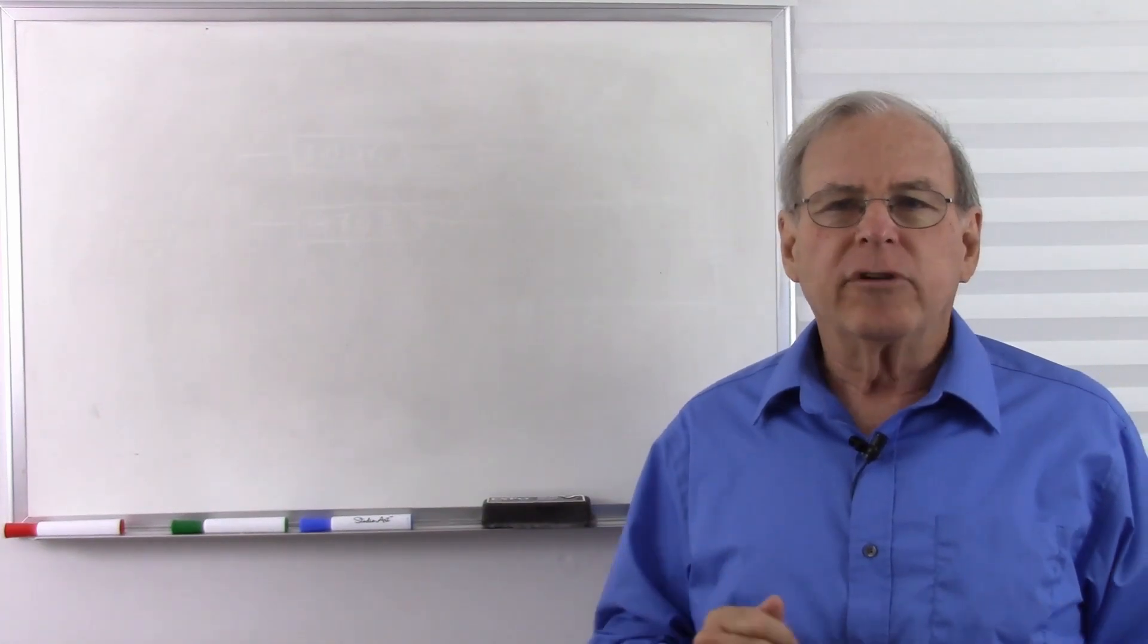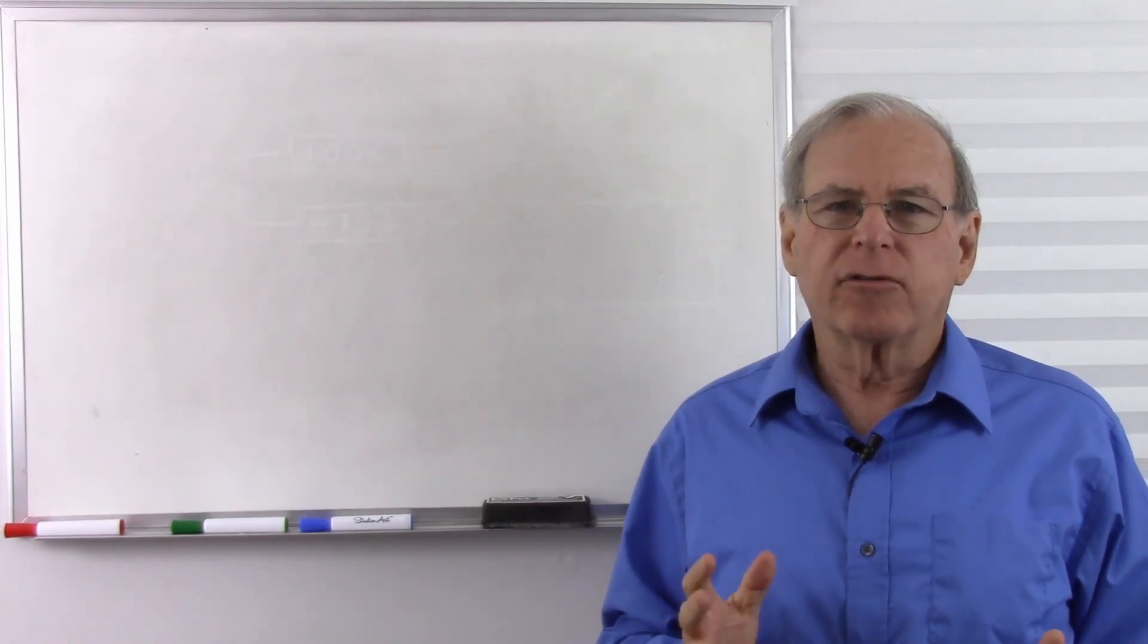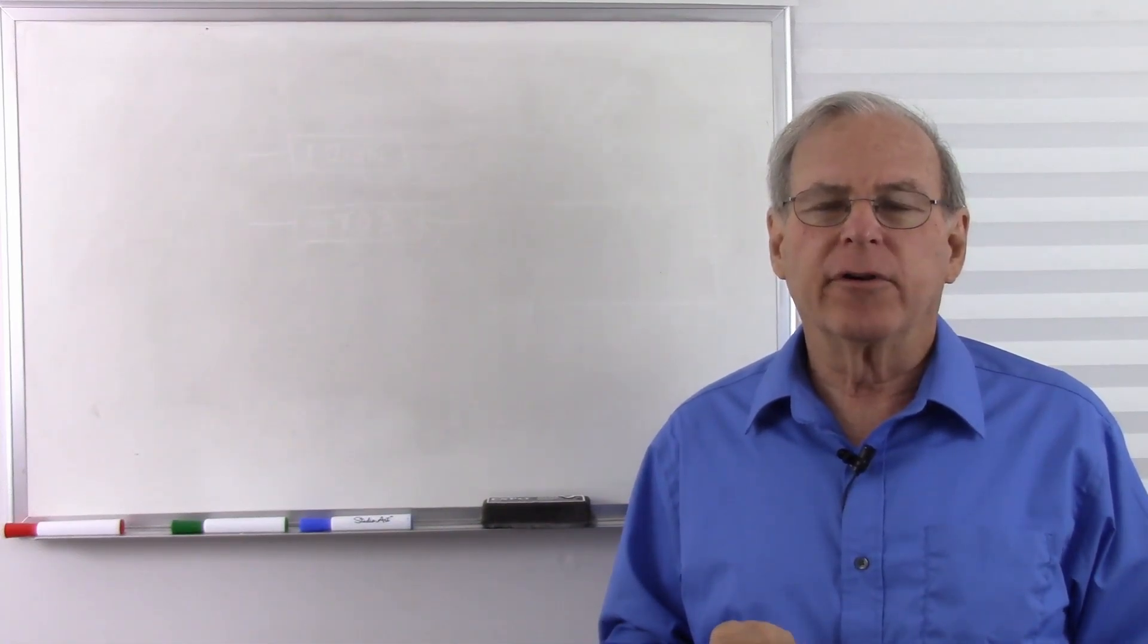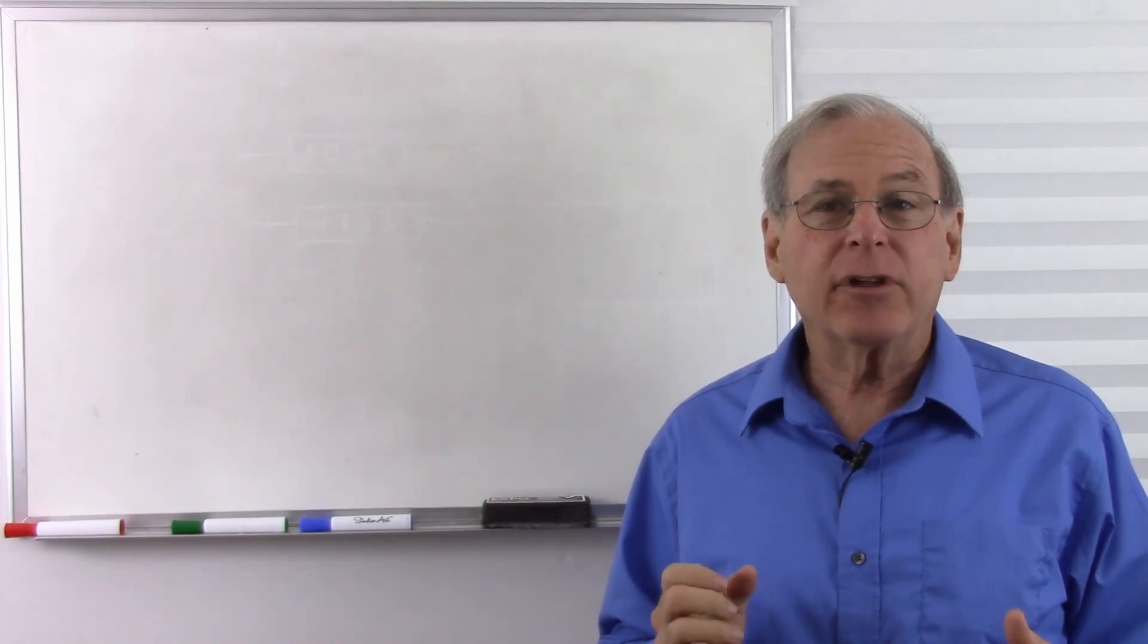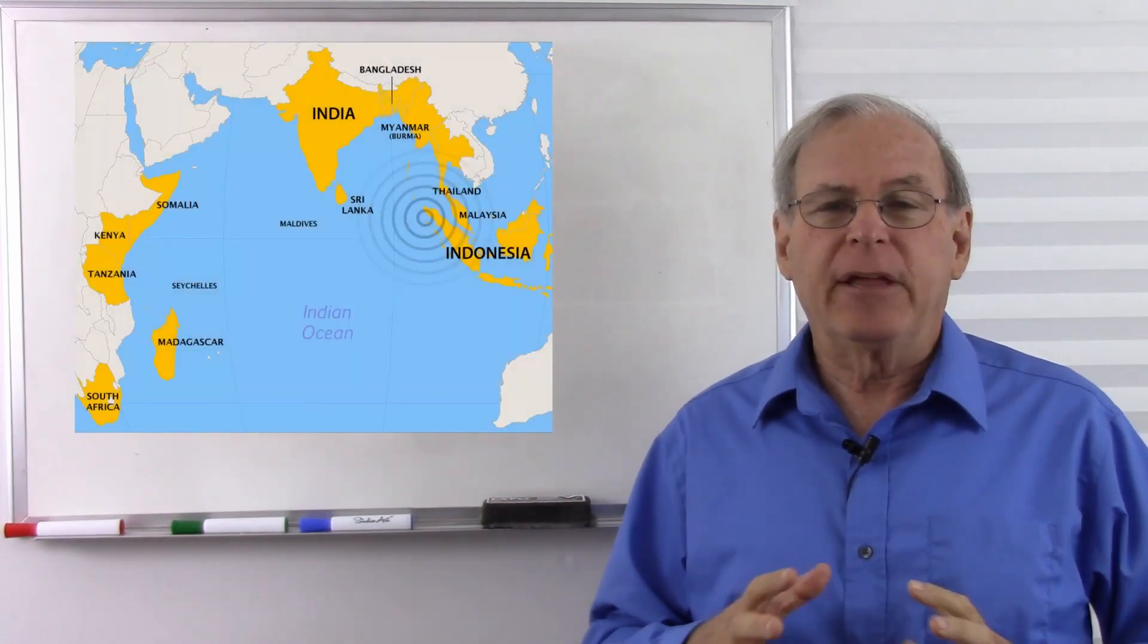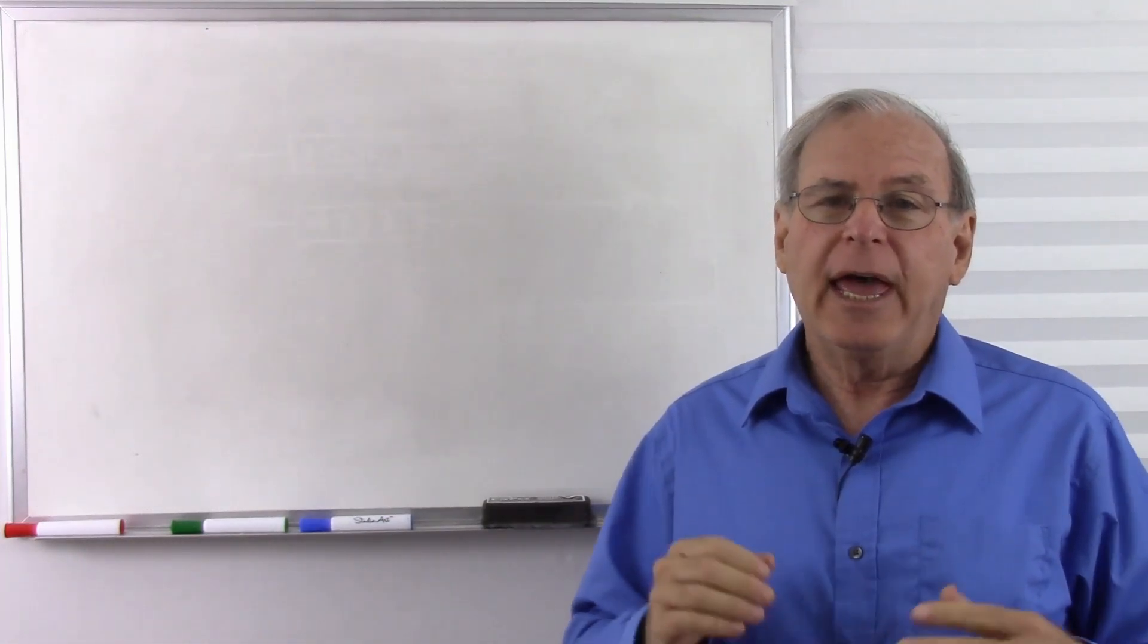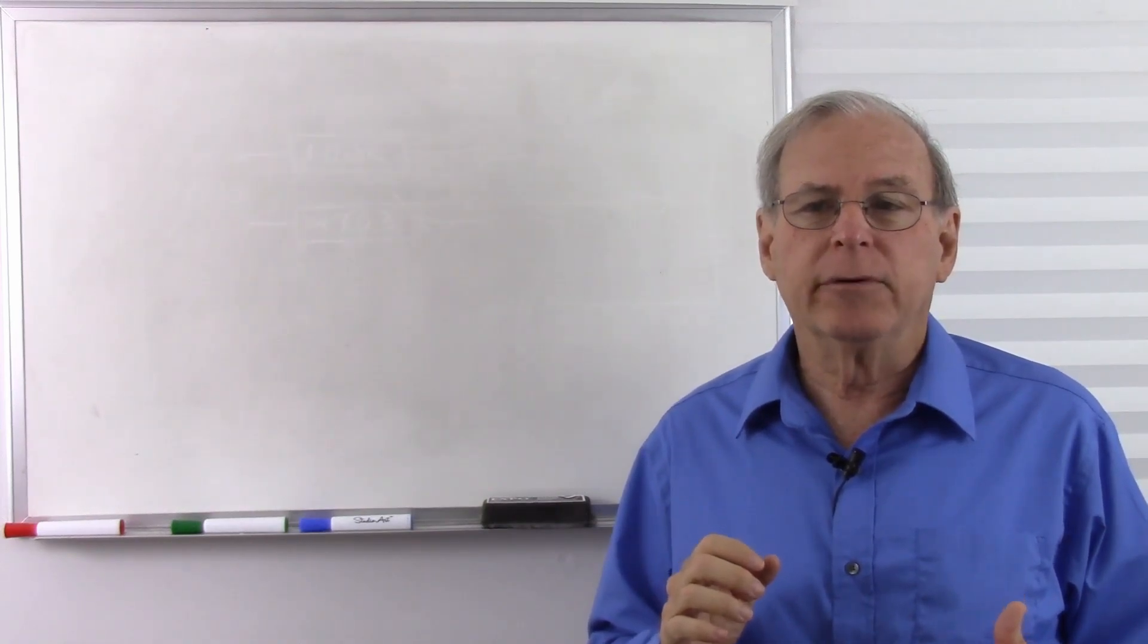The second was originally defined as one 86,400th of a mean solar day. In other words, one day contains 86,400 seconds. But this is a problem because the speed of the Earth is not uniform. In fact, when the earthquake that caused the 2004 tsunami happened, that changed the arrangement of plates of the Earth enough that a slowdown in the Earth's rotation was actually measurable. And the Earth's rotation is slowing down over time because of tidal effects from the Moon.